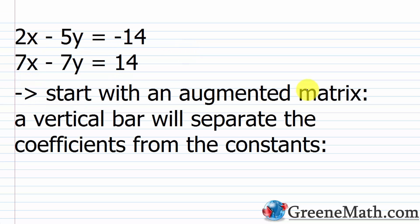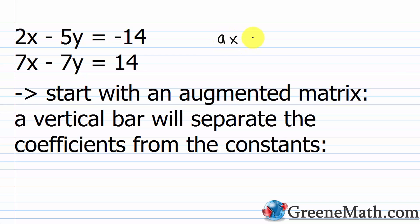Let's start with a basic example. We have the linear system: 2x minus 5y equals negative 14, and 7x minus 7y equals 14. We'll start with an augmented matrix. Notice that each equation is already written in standard form — ax plus by equals c — and we want both equations in this form before proceeding.